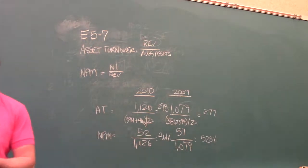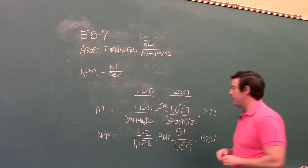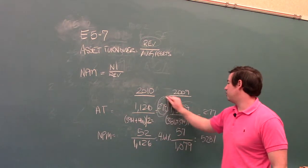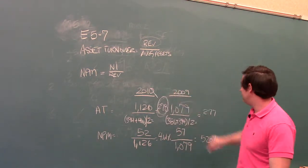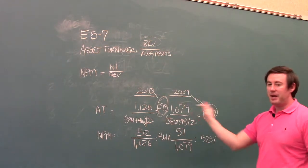Okay, the second part of this problem asks us, would analysts be more likely to increase or decrease their estimates of the stock value on the basis of these changes? Explain by interpreting what the changes mean. Okay, so when we look at these changes from year to year, we see that the asset turnover ratio doesn't change too much. 2.78 in 2010, 2.77 in 2009, not much of a change.